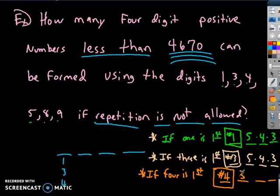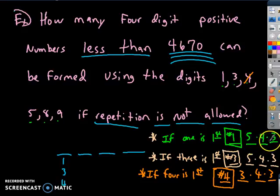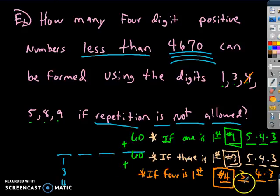So for the case where 4 is first: 3 × 4 × 3 = 36 ways. Adding all the cases: 60 + 60 + 36 = 156. There are 156 ways to form a four-digit number less than 4,670 using those digits without repetition.